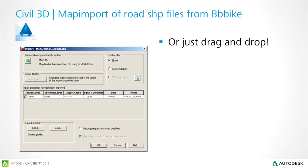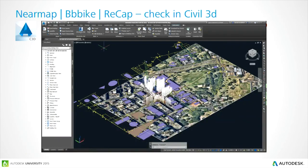The next step is bringing in the BBBike shapefiles. Because they're based on real-world coordinates, you can just drag and drop them into InfoWorks 360. We have all data at the right location: the purple points are building footprints, the splines denote roads, we have the Nearmap image, and the laser scan point cloud data centered on our chosen site.